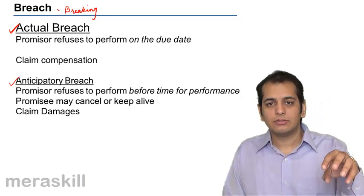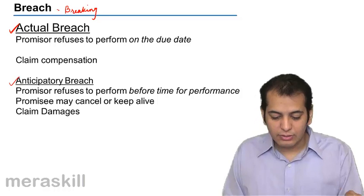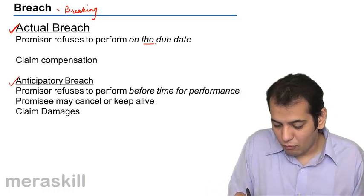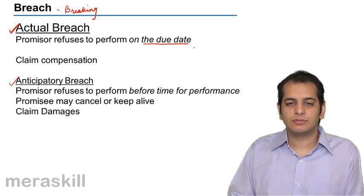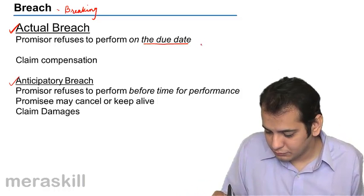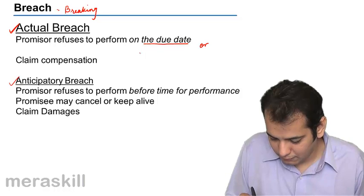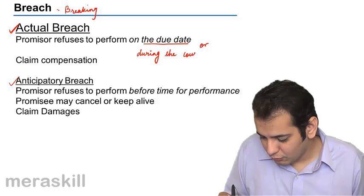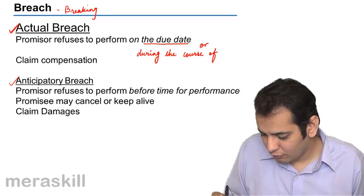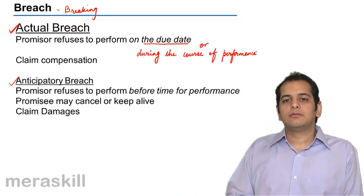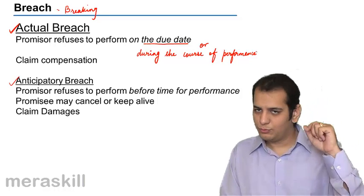Actual breach means the promisor refuses to perform the contract on the due date of performance — when the performance is due or during the course of performance. There are two situations.